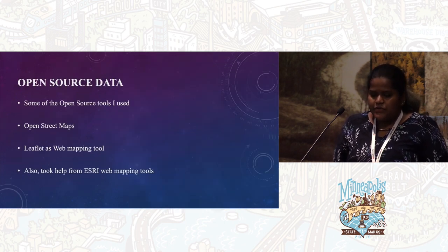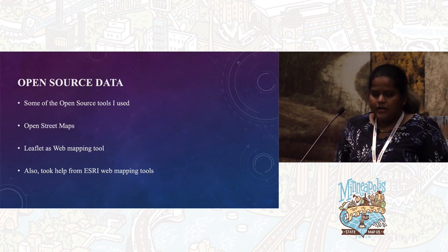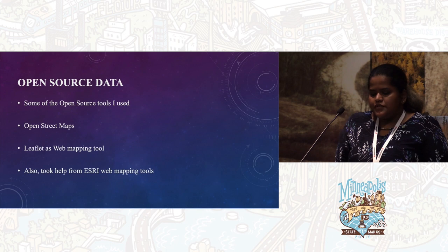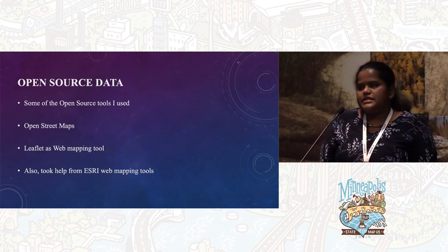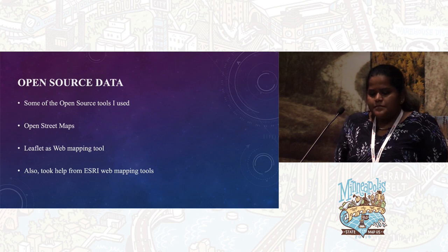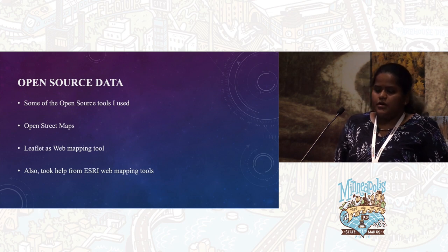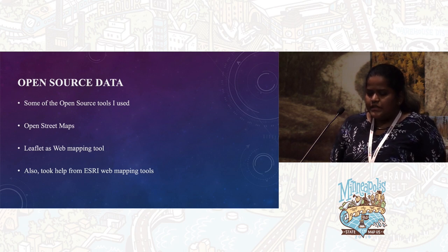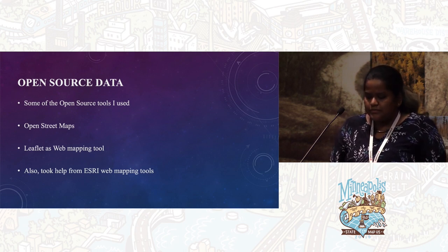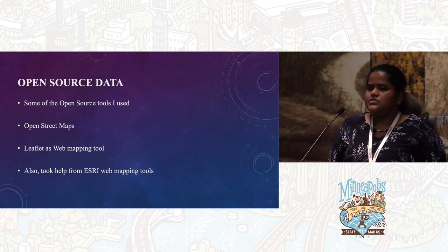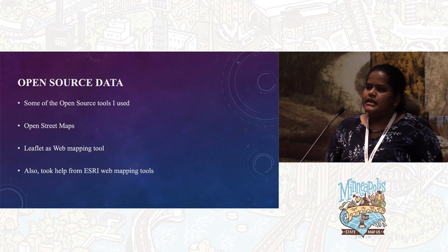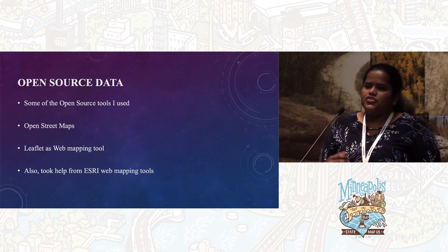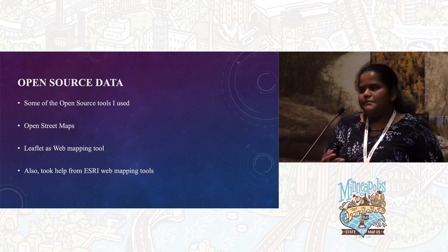Some of the open source tools I used were OpenStreetMaps for geocoding, Leaflet as a web mapping tool, and I also took help from web mapping tools because the data was on ESRI API. Leaflet provided all the tools to do geocoding with OpenStreetMap and to incorporate data from the tax files. I also researched using QGIS, but the problem with QGIS is it also doesn't update simultaneously when changes go in, so web mapping using current data was really the solution.